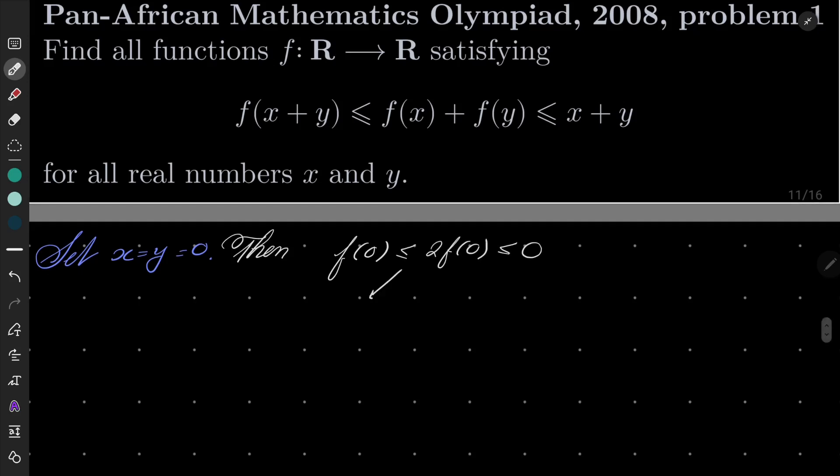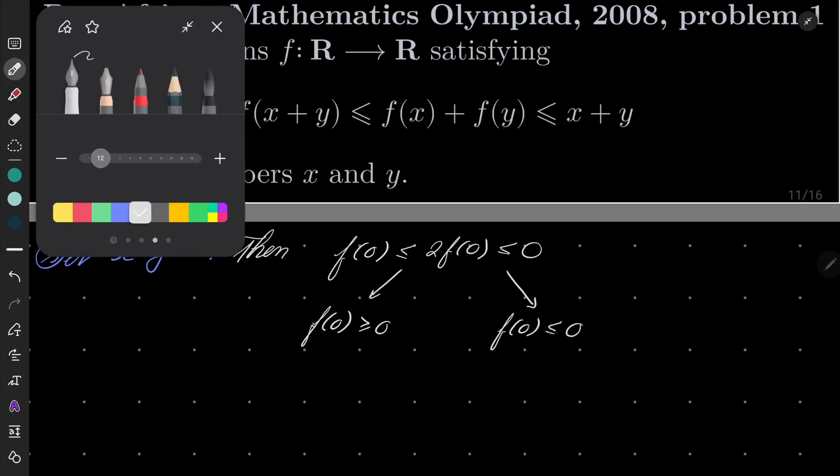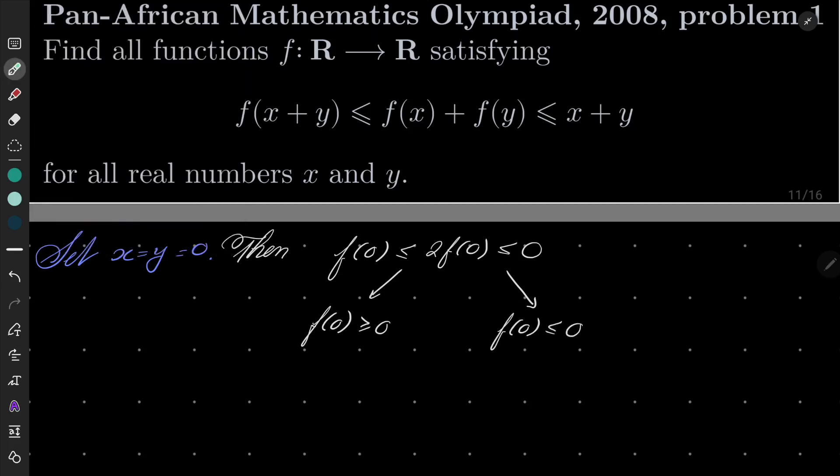f(0) ≤ 2f(0) ≤ 0. And let's look. The first inequality in fact says that f(0) ≥ 0, while the second inequality says that f(0) ≤ 0. And that can only mean one thing, namely f(0) must be equal to 0 for both of these inequalities to be satisfied.